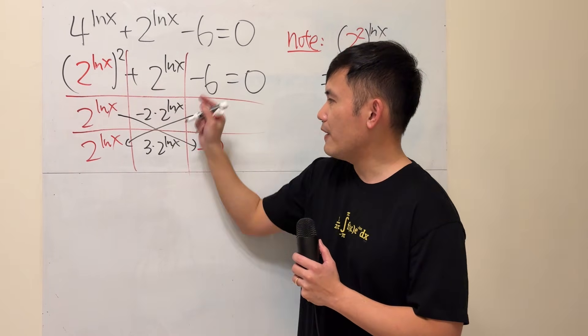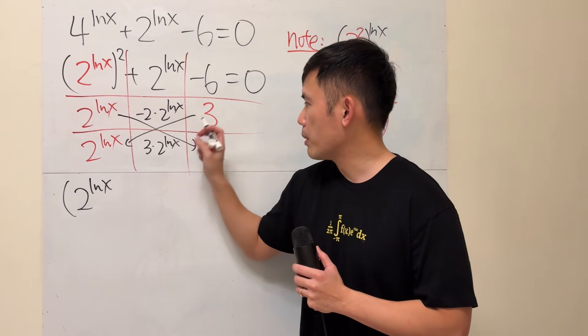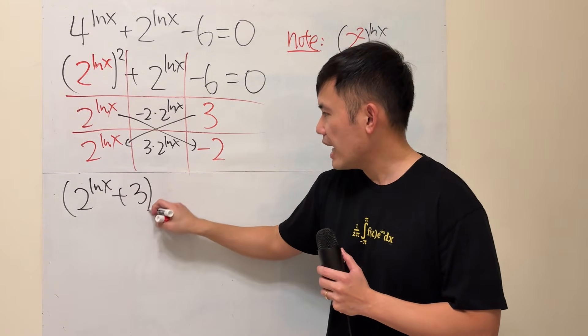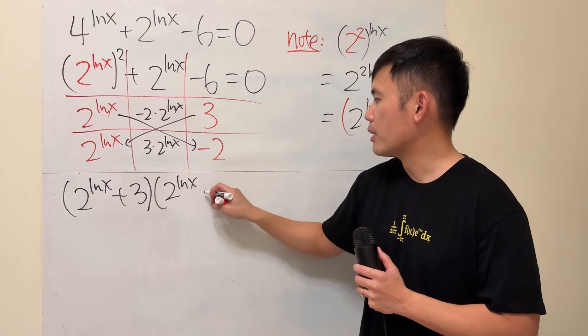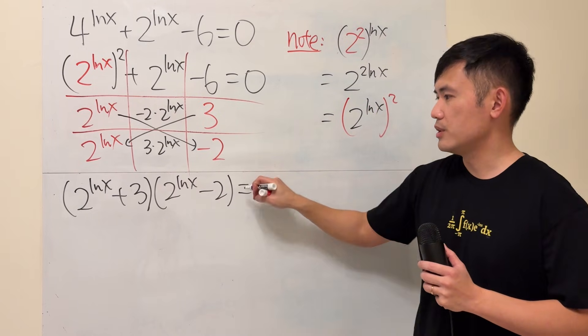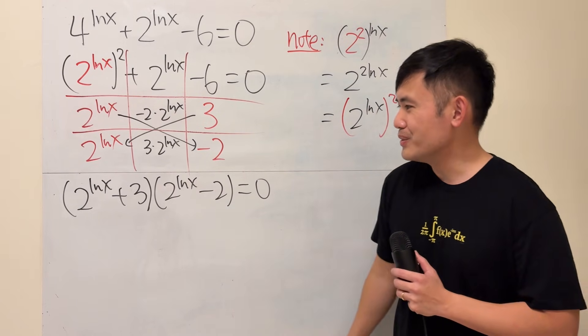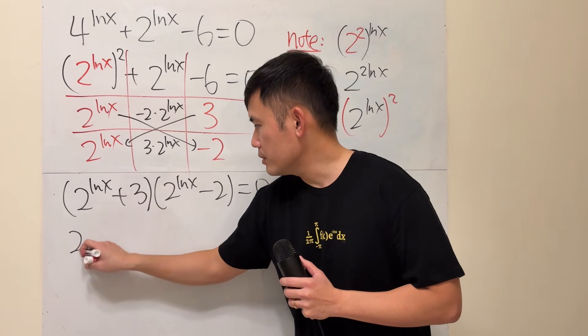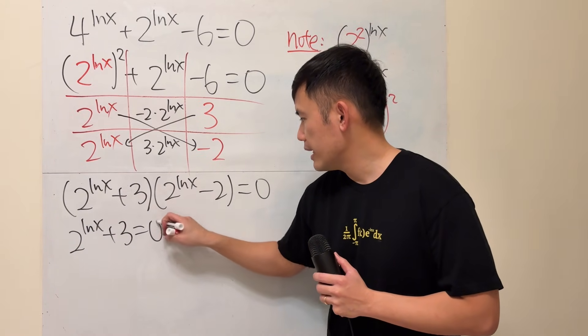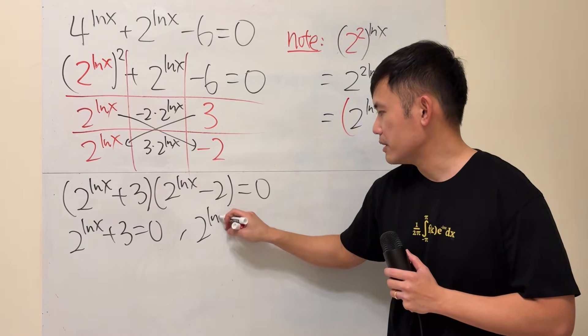So, that means, we can factor it, we get 2 to the ln x power plus 3, times 2 to the ln x power minus 2, equals 0. We can continue now. Put this equals 0, and then put this equals 0, and then solve them individually.